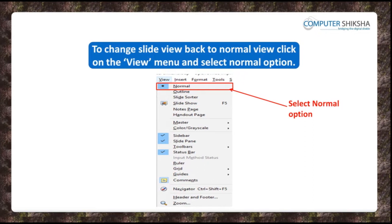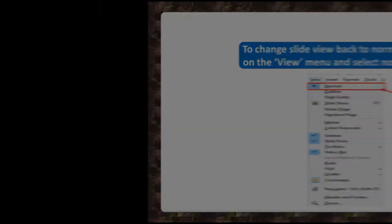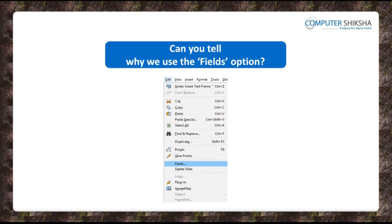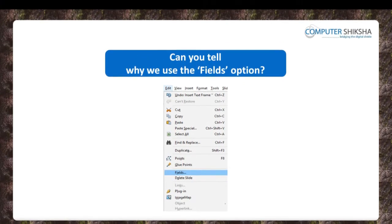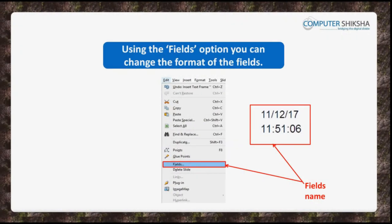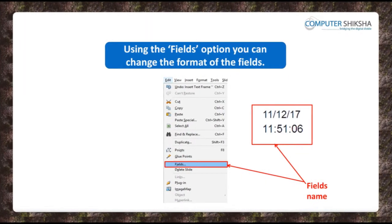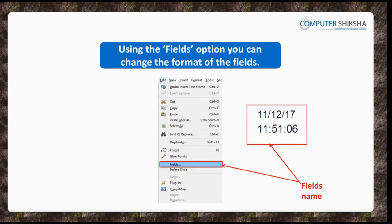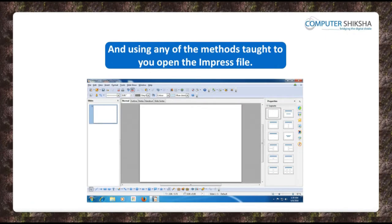Can you tell why we use the fields of the Edit menu? With the use of the fields option of the Edit menu you can edit the fields option meaning that you can change the format of the fields. Power on your computers and open your Impress file.